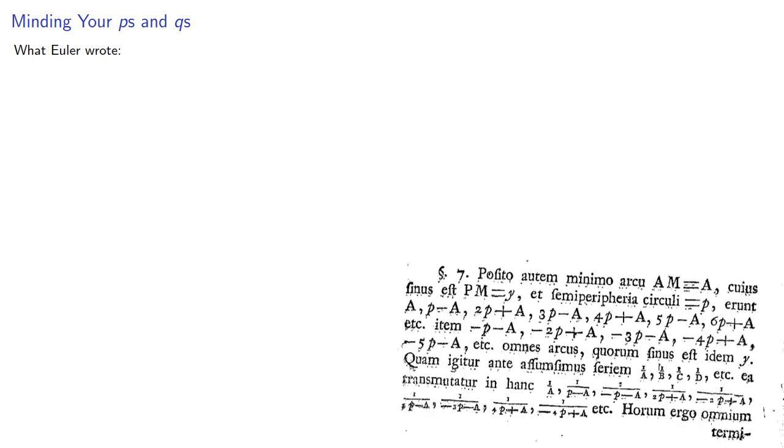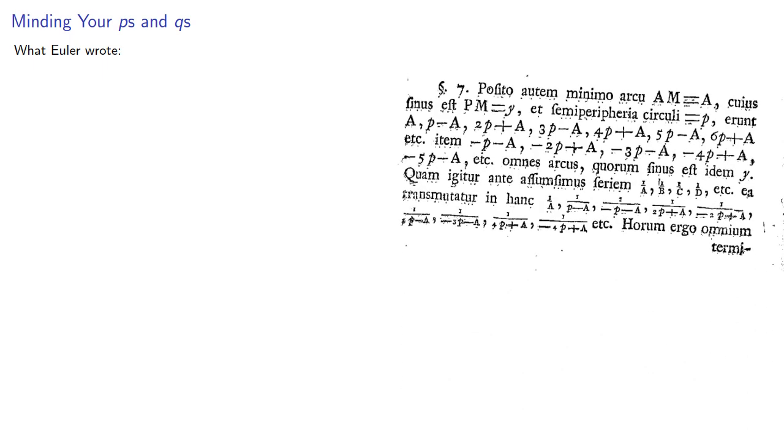At this point, Euler wrote... And for those of us who can't read Latin, what this says is something like the following. Let the least positive solution to sine x equal y be a.